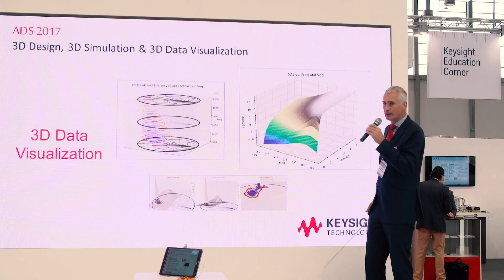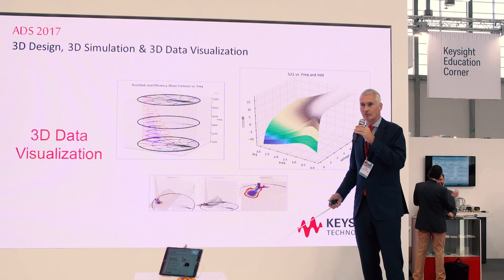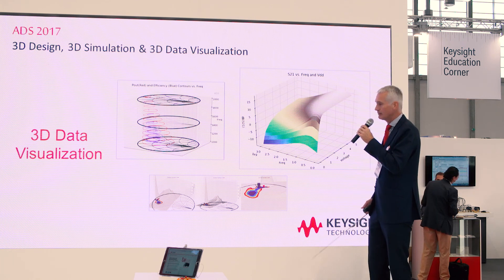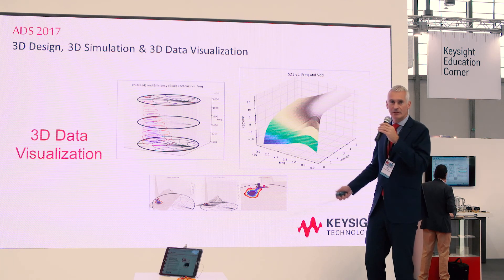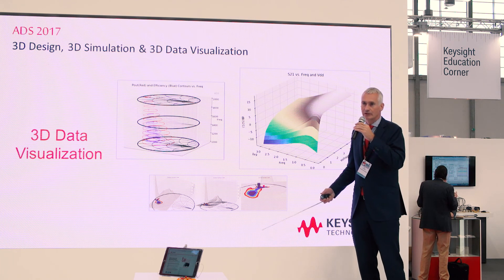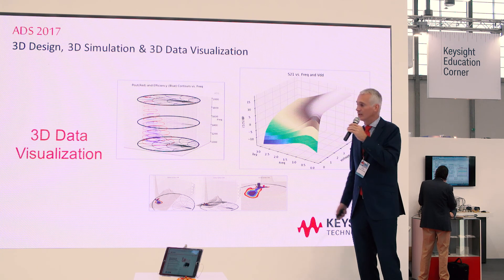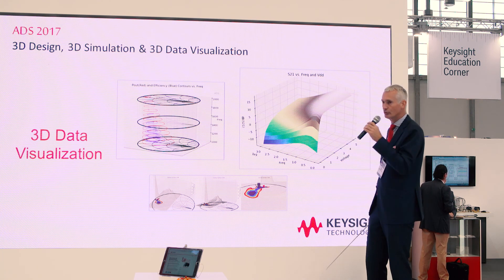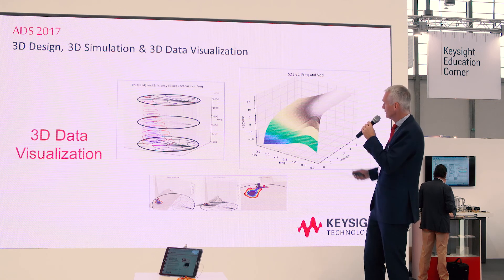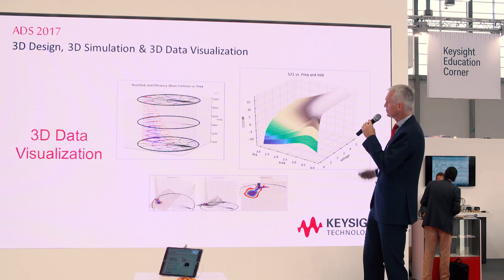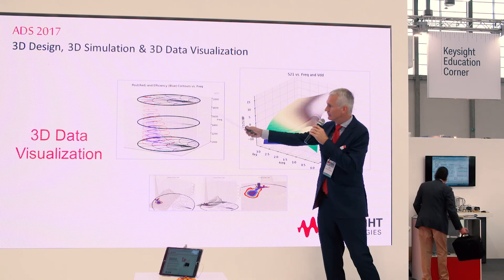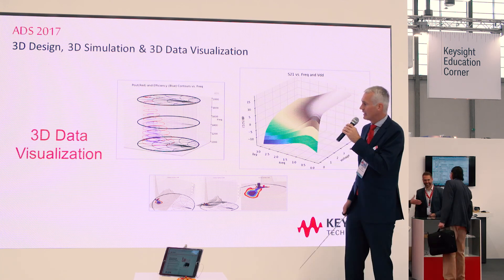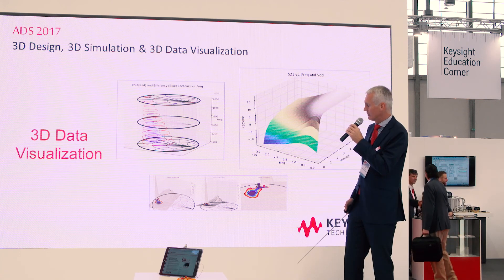The data display window graphically represents simulation results — Smith charts, frequency plots, and eye diagrams in the case of transient simulations. That tool is now also 3D, so you can do three-dimensional plots. For example, with a sweep parameter you can have a 3D Smith chart.